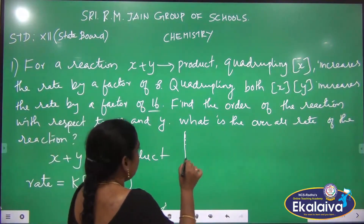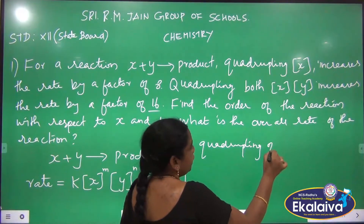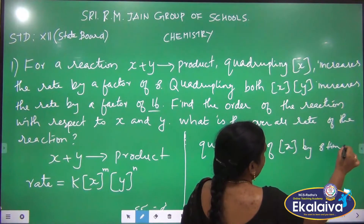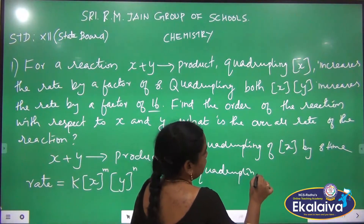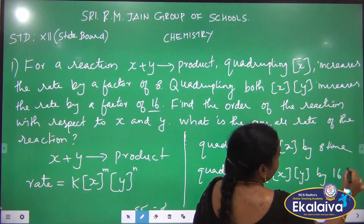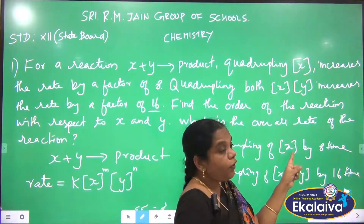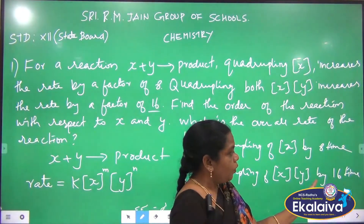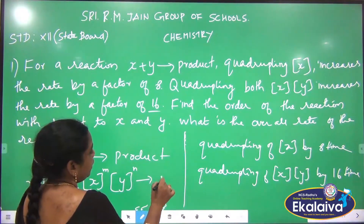Now we are going to consider the quadrupling of concentration of X — the rate is going to increase 8 times. And for both reactants, concentration of X and Y increased gives a 16 times increase. So by increasing the concentration of X by 4 times, the overall rate increases by 8 times. By increasing the concentration of X and Y by 4 times, the overall rate increases by 16 times. Now we want to write these as equations.